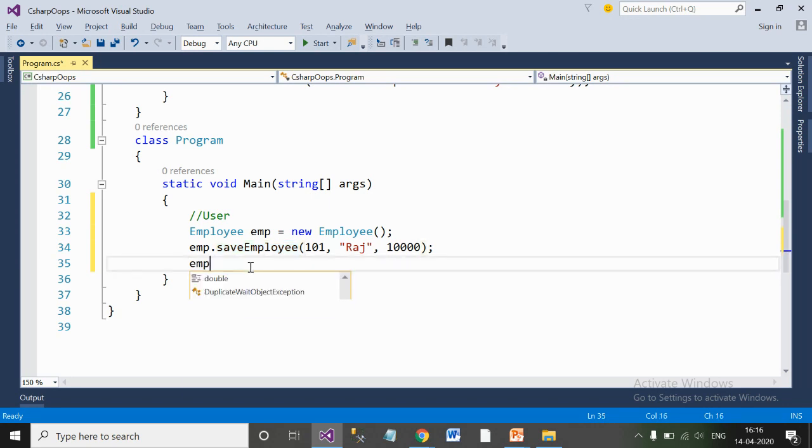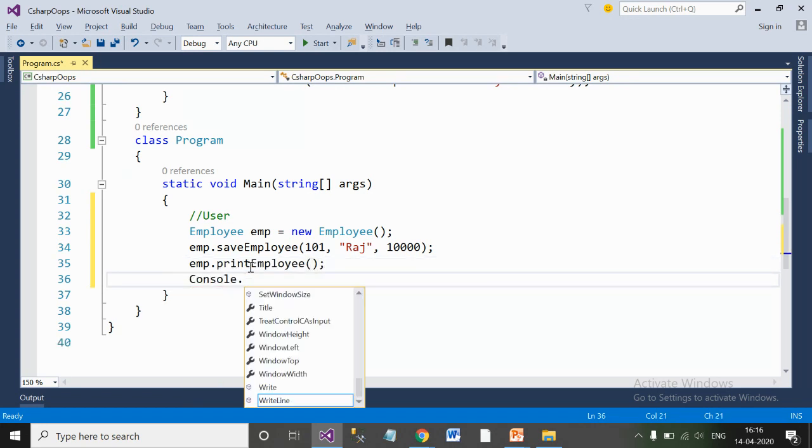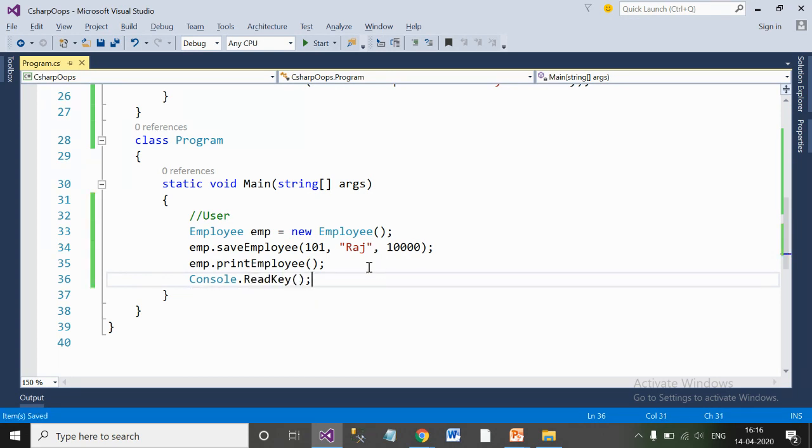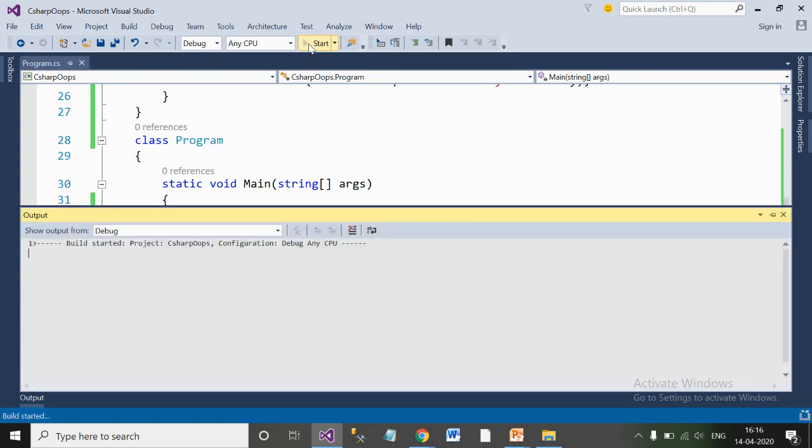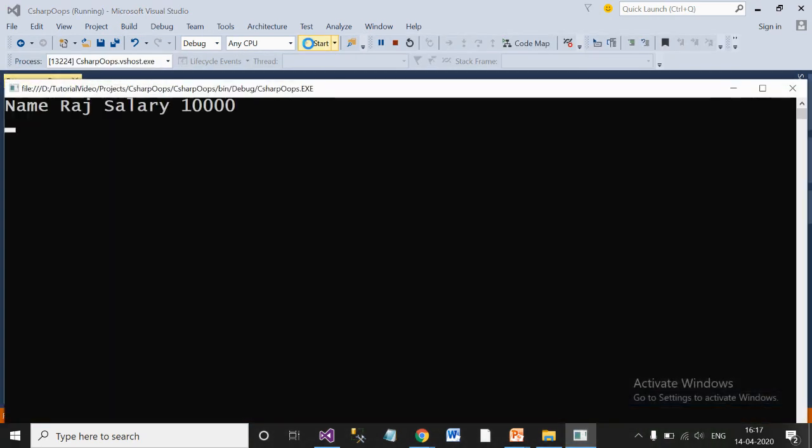Similarly we'll write employee.printEmployee, which will print the employee information, and console.readKey to pause the screen to see the output. Now once you have written the code, you can run it. You can see the output: name is Raj and salary is 10,000. That is what we printed.